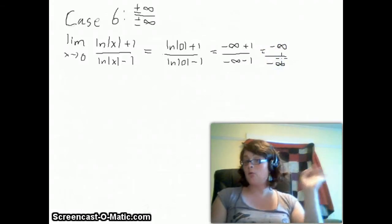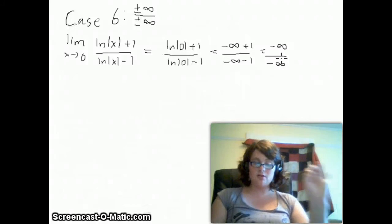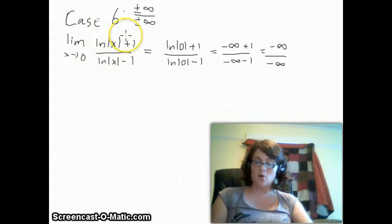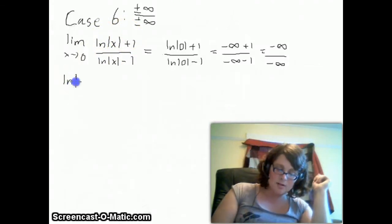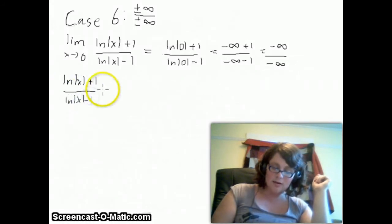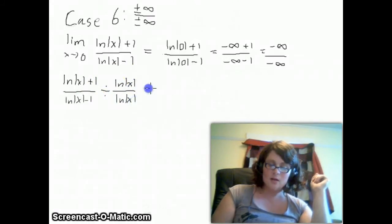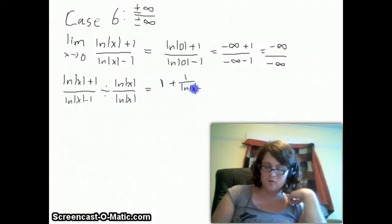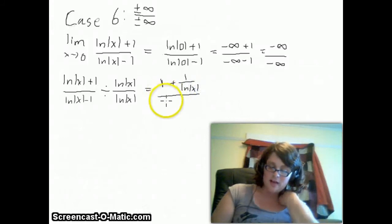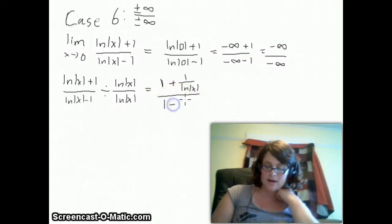This tells us that we're in case 6. So what we're going to do is divide the top and bottom by something which is going to plus or minus infinity. ln x here is going to minus infinity, so that's what we're going to divide the top and bottom by. We take ln|x+1| over ln|x−1| and divide the top and bottom by ln|x|. Dividing ln|x| by ln|x| gives you 1, and then we have 1 over ln|x|. So the expression becomes (1 + 1/ln|x|) over (1 − 1/ln|x|).